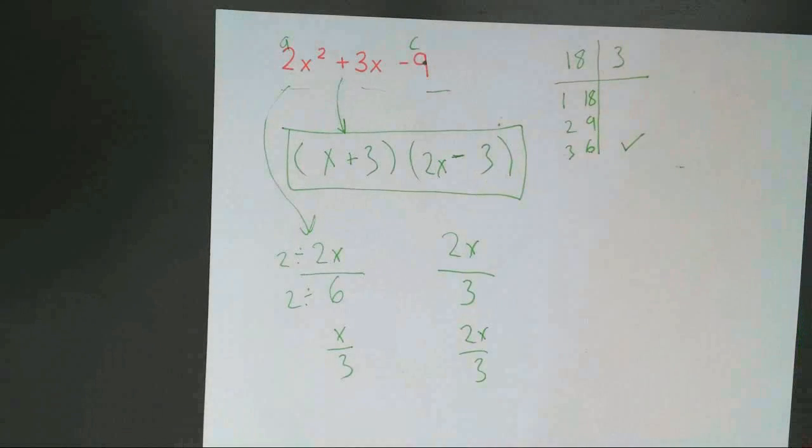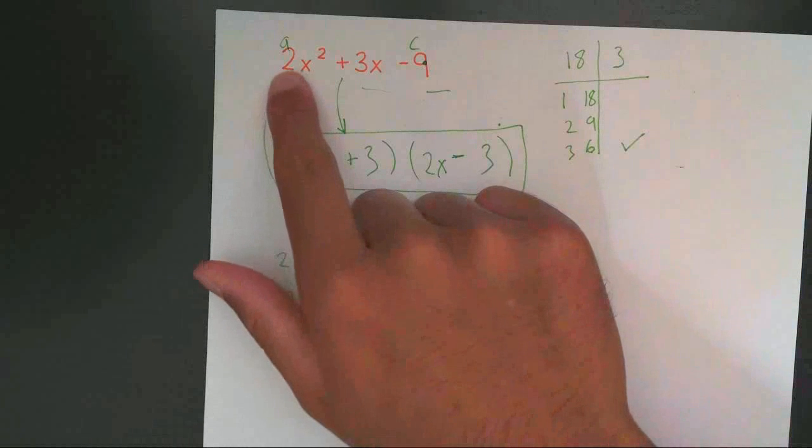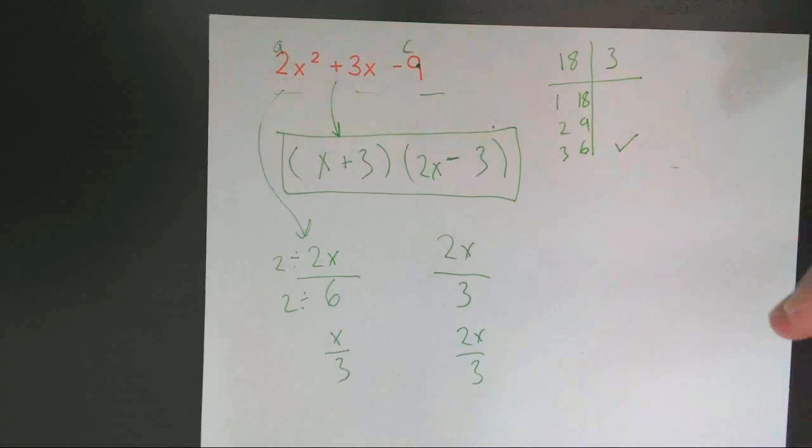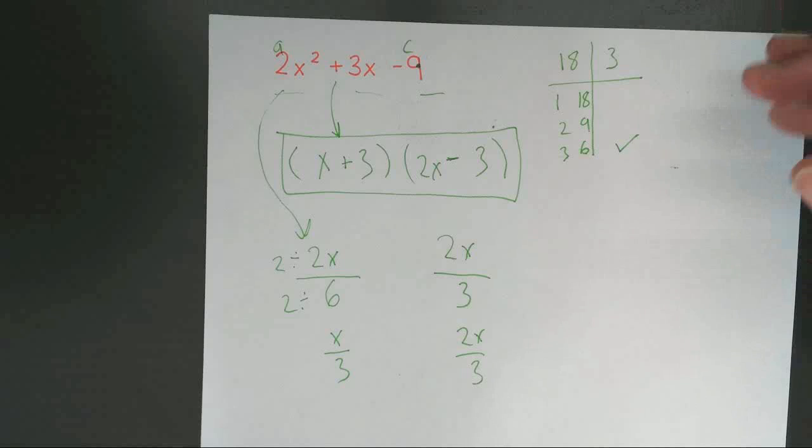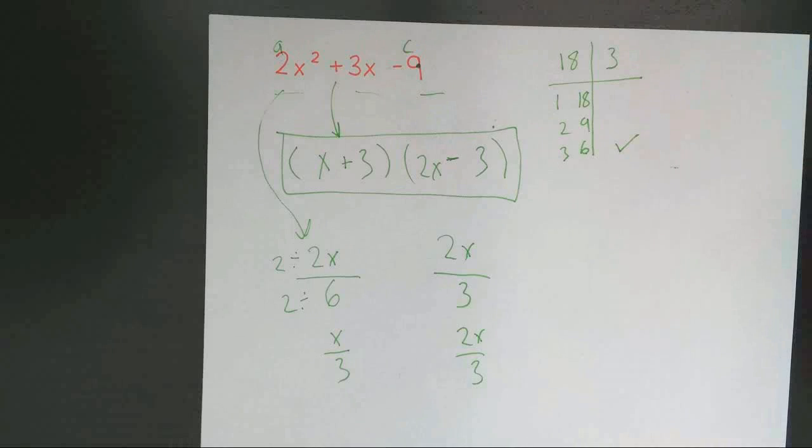So this takes a complex way of finding the factors of a trinomial that ever has an A that's not equal to 1 into easier steps. These steps are a lot easier. And hopefully this actually helps you figure out how to factor a trinomial when A is not equal to 1. Thank you.